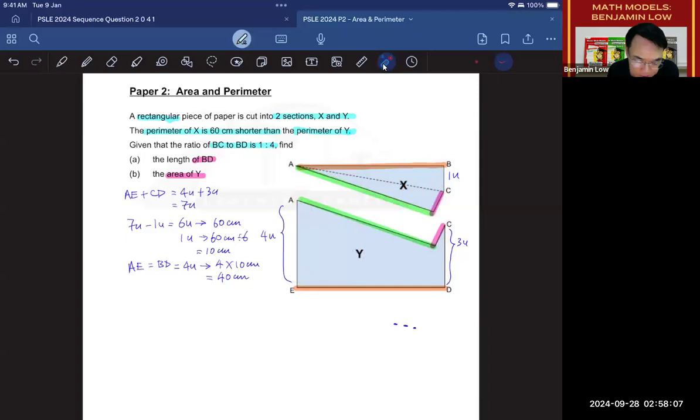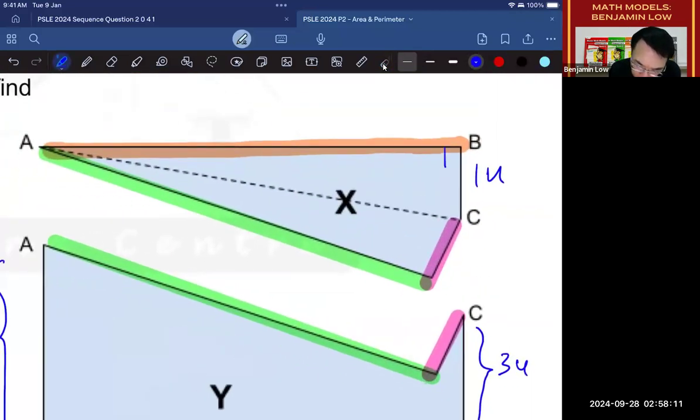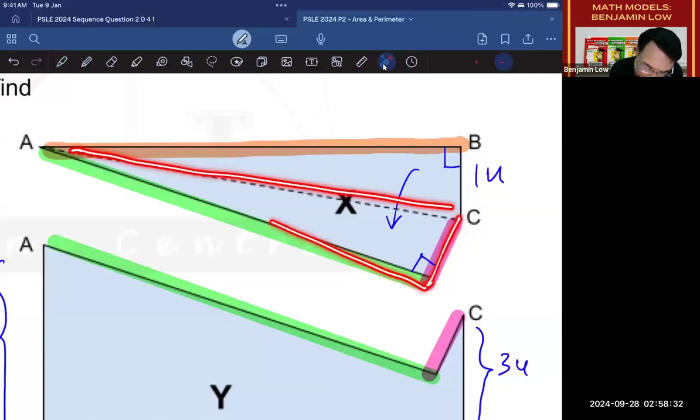But then, how am I going to find the area of this part? The answer is this. Since this is the corner of a rectangle, it must be 90 degrees. And since this was folded down to this, then this must also be 90 degrees. So if both are 90 degrees, then I am able to take this shape and I am able to move this over to here.